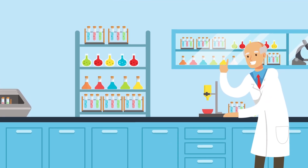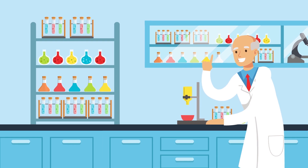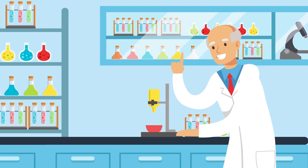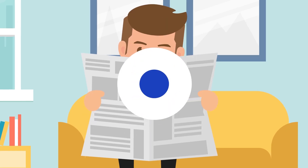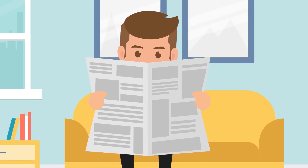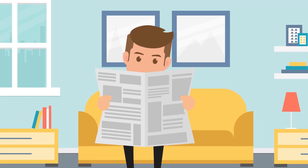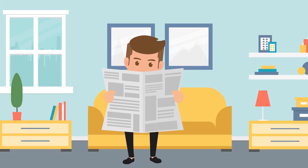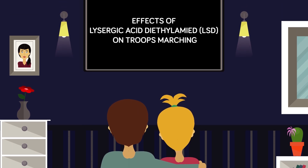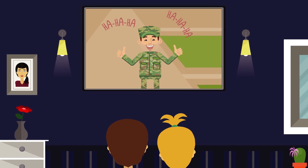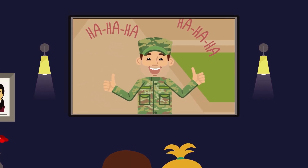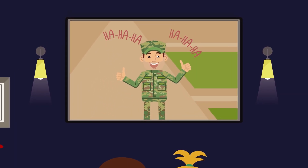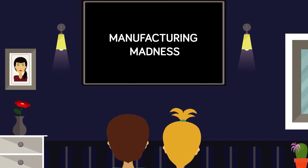LSD was one of several drugs being used at Edgewood Arsenal for possible use in psychochemical warfare. While the MRVP began in 1948, a New Yorker article states that psychochemical research at Edgewood Arsenal did not begin until 1956. The purpose of this testing was to identify a chemical that causes no physical harm but triggers mental disruption so profound that it could incapacitate enemy soldiers. In one 1958 film called Effects of Lysergic Acid Diethylamide on Troops Marching, well-trained soldiers dosed with LSD were reduced to a bunch of giggling, disoriented men unable to follow simple commands.